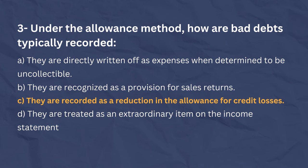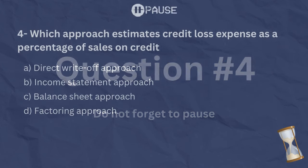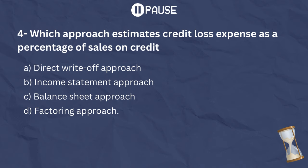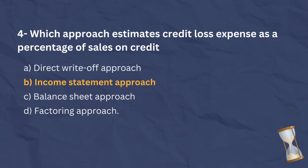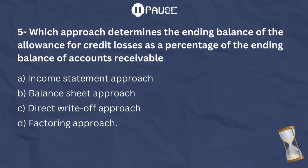Now try to solve the next question. The correct answer is B. The income statement approach estimates credit loss expense as a percentage of sales on credit. This method calculates the allowance for credit losses based on the relationship between credit losses and credit sales.